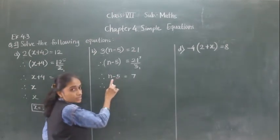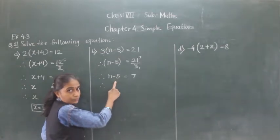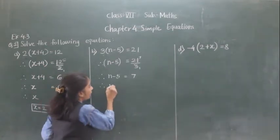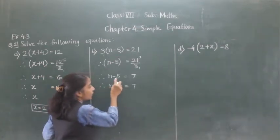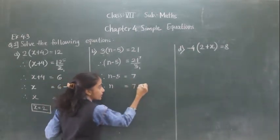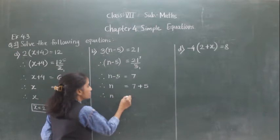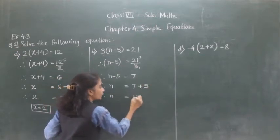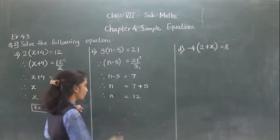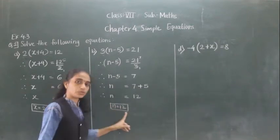See here, 5 is on subtraction. If we transfer 5 to the right hand side, it will become addition. So N is equal to 7 plus 5, which is 12. Therefore N is equal to 12.